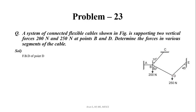We consider the free body diagram at point D. The force F1 = 250N acts vertically downward. The DE segment force acts along the DE line from point D — let this be force F2.